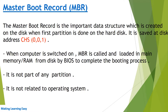It is saved at the disk location CHS 001, means cylinder 0, head 0, and sector 1. This is the first sector of the hard disk. When we switch on our computer, MBR is called and loaded in the main memory from the hard disk.